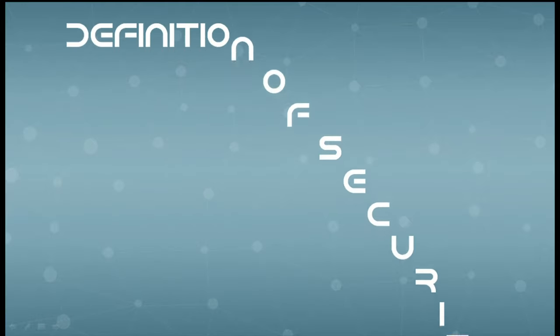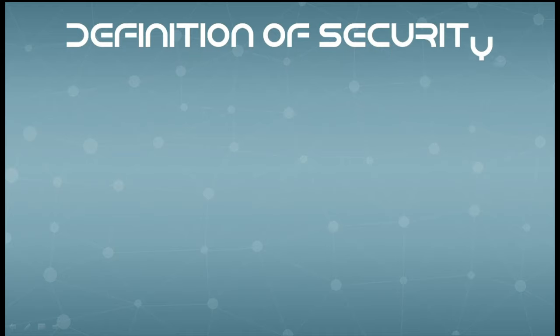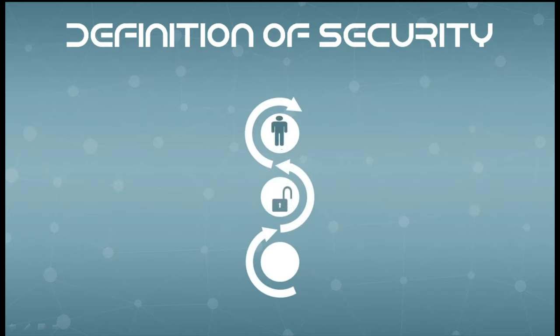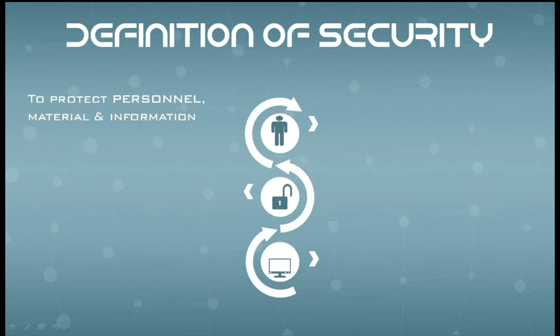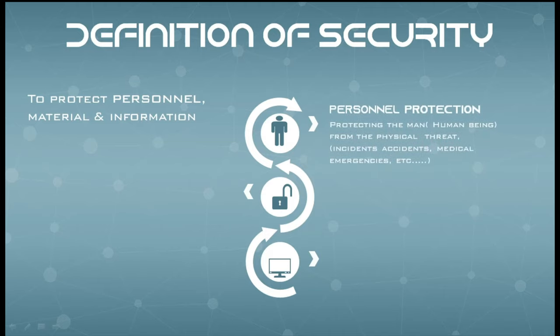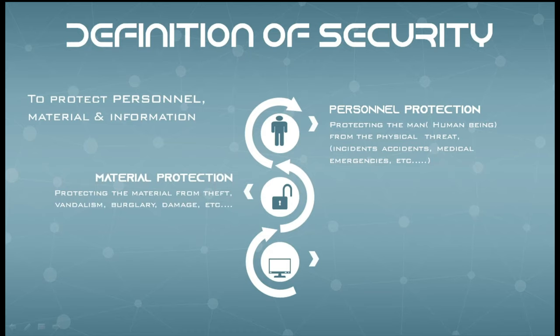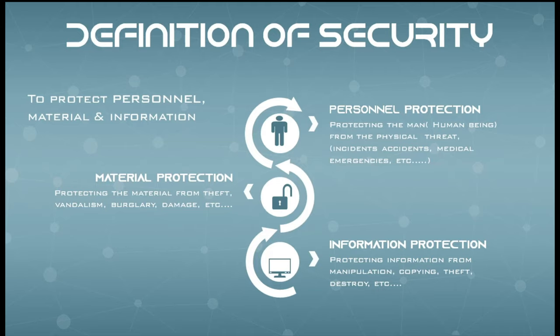The definition of security is to protect man, material, and information. Man refers to human beings or animals. Material refers to company assets — mobile or immobile assets. Information protection covers things like software companies working on a project, or in an industrial area a finished product that has to be manufactured and shipped to the customer or client.